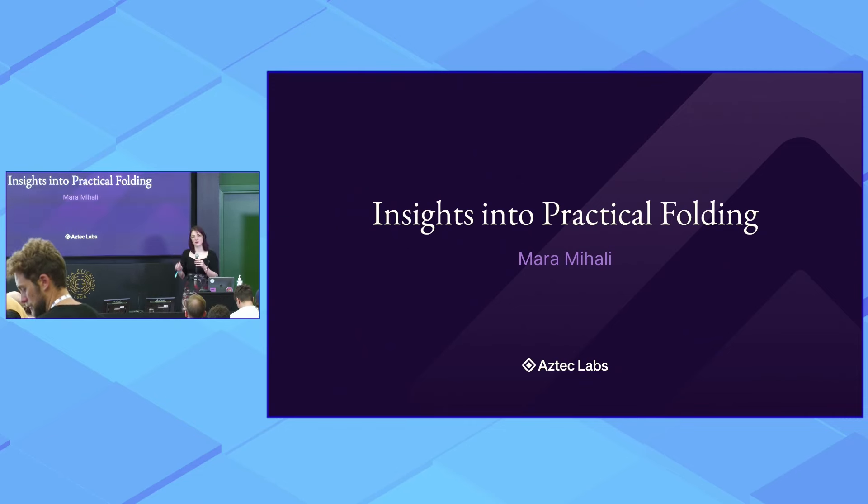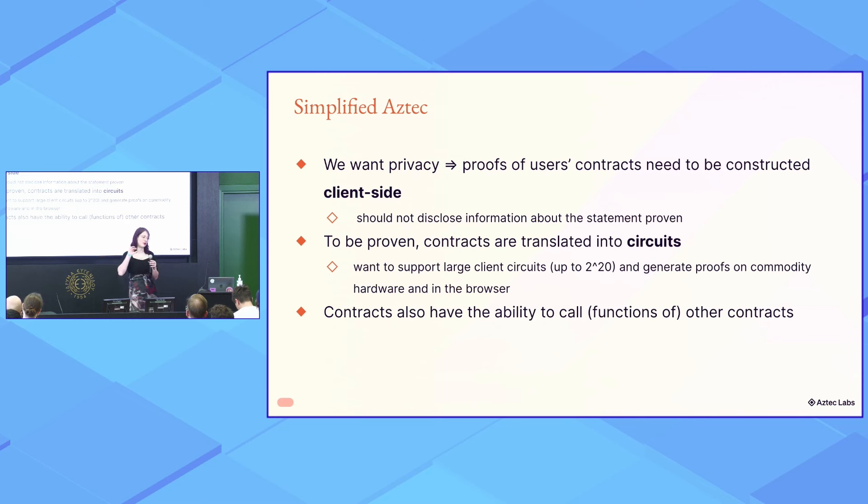But today I'm going to try to talk about the more practical side of folding, namely how we adapted Protogalaxy to fit in our proving system and Aztec infrastructure. In Aztec we want privacy, which basically means that proofs of user contracts need to be executed client-side and should not disclose any information about the statement being proven, so it should be zero knowledge.